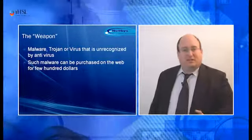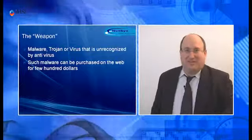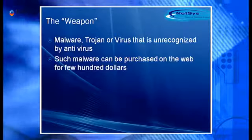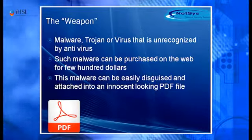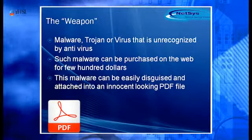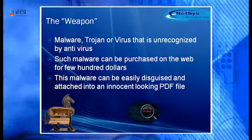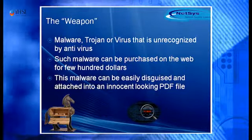Such malware is not a big deal to obtain. If you don't know how to write it yourself, go to the internet — it costs a couple of hundred dollars, which is not much for an attacker. In the case of governments, they have unlimited resources. Once we have this malware, we can hide it and disguise it into an innocent-looking file format such as PDF or Excel, so that when our target double-clicks and executes it, they may see a picture or document, but in the background our Trojan horse or malware is being executed.